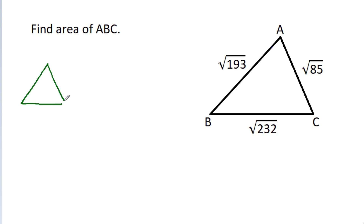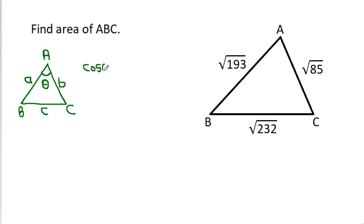In any triangle A, B, C, if AB is 'a', AC is 'b', BC is 'c', and this angle is theta, then cos theta is equal to a² + b² − c² divided by 2ab.